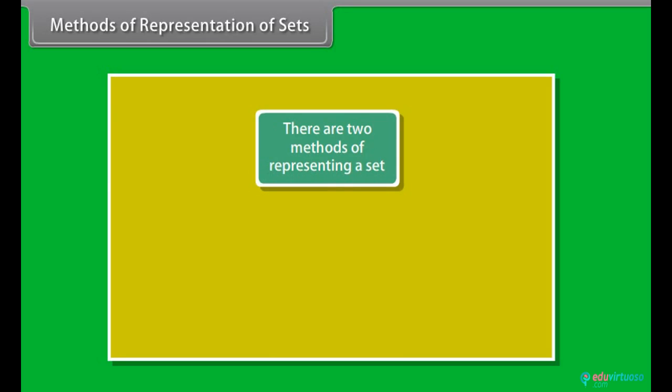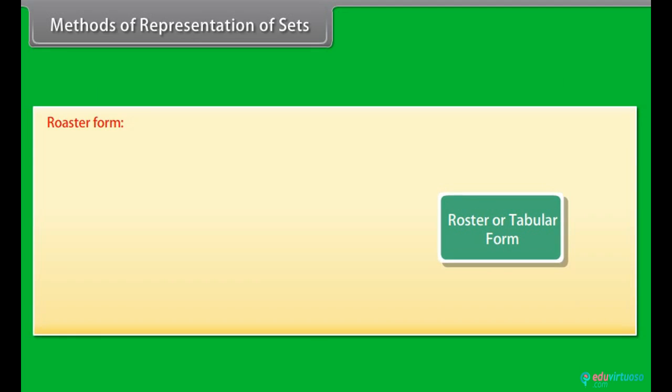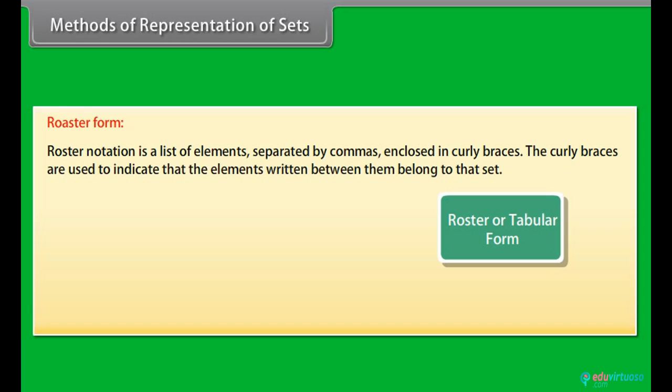Methods of representation of sets. There are two methods of representing a set: Roster or tabular form, and set builder form. Roster form: Roster notation is a list of elements separated by commas, enclosed in curly braces. The curly braces are used to indicate that the elements written between them belong to that set.